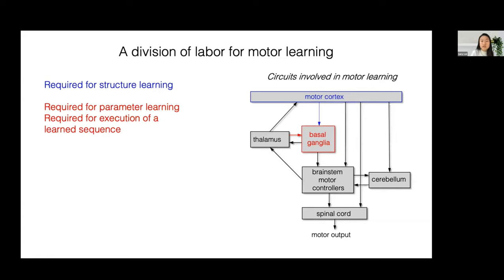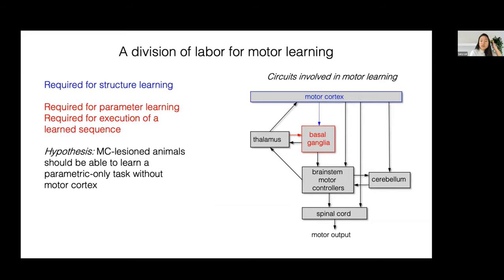Both the data and the modeling suggest that motor cortex is required for providing information about task structure, but not for adapting learned movements. The striatum and other subcortical areas can support reward-based parameter learning in the absence of motor cortex. This framework suggests that motor cortex lesioned animals should be able to learn a parametric-only version of this task without motor cortex, and that remains an avenue of further exploration.